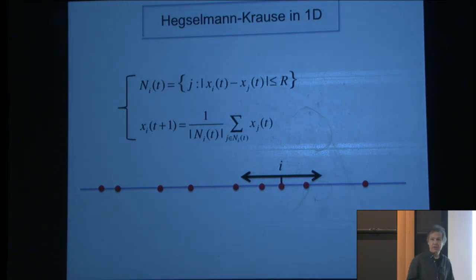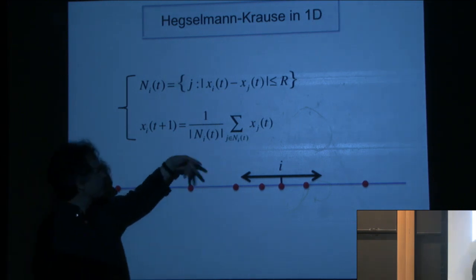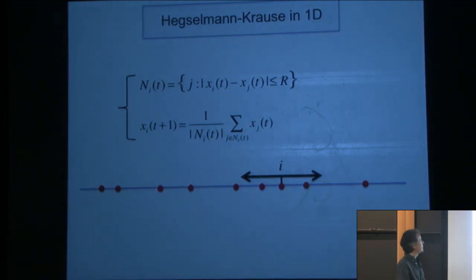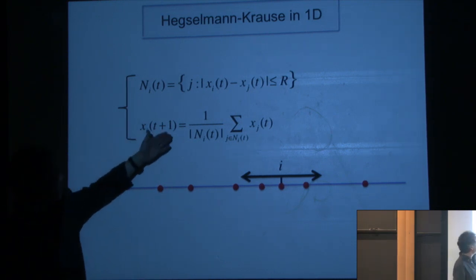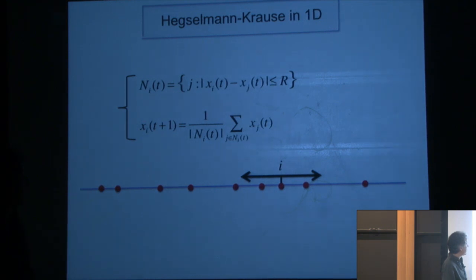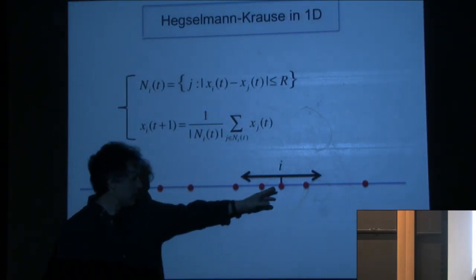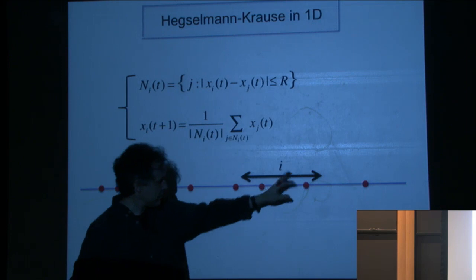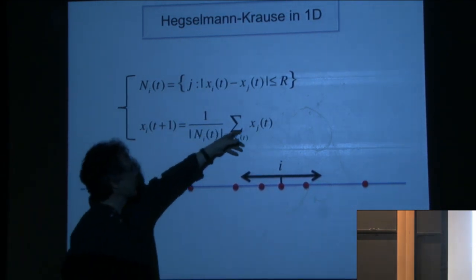Now let's look in one dimension. The only problem with one dimension is that it's harder to draw pictures. So here's the model: you have N agents, the i-th agent is at position x_i(t) at time t. It's a dynamical system — this agent looks at the agents to its left by a distance r, and to its right by a distance r, then moves to the average.